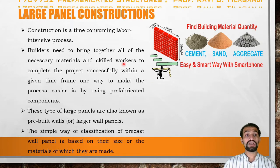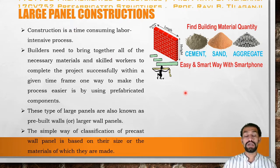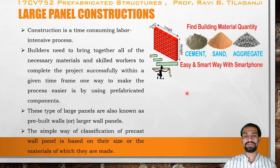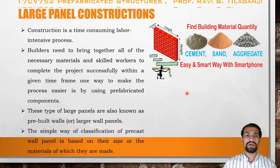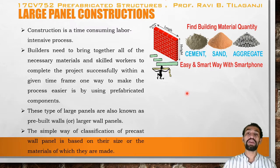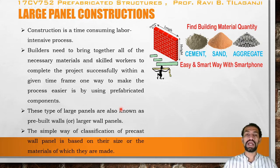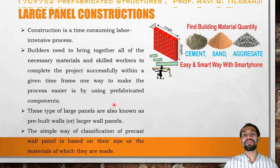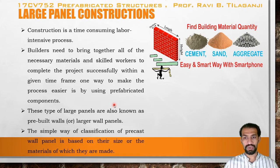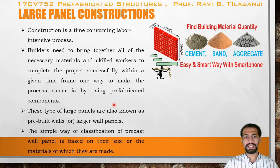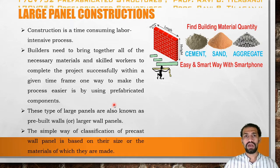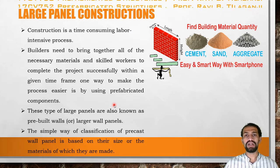Construction is a time-consuming and labor-intensive process. A builder needs to bring together all the necessary materials and skilled workers to complete the project successfully within a given time frame. One way to make the process easier is by using prefabricated components. If large amounts of construction are needed, the same type of materials can be used for prefabrication. These panels are also known as pre-built walls or large wall panels.